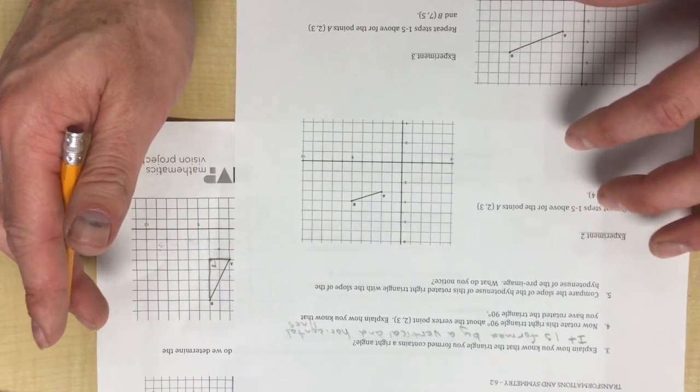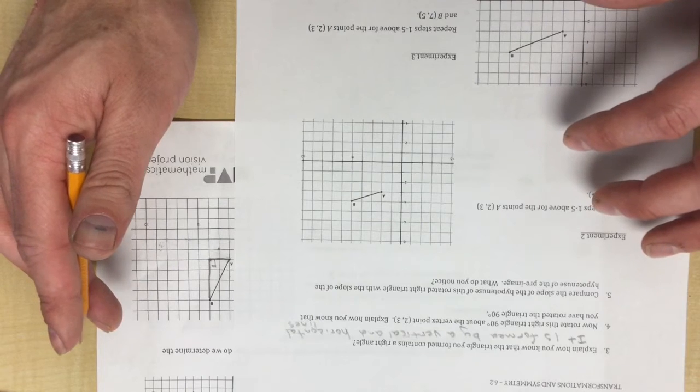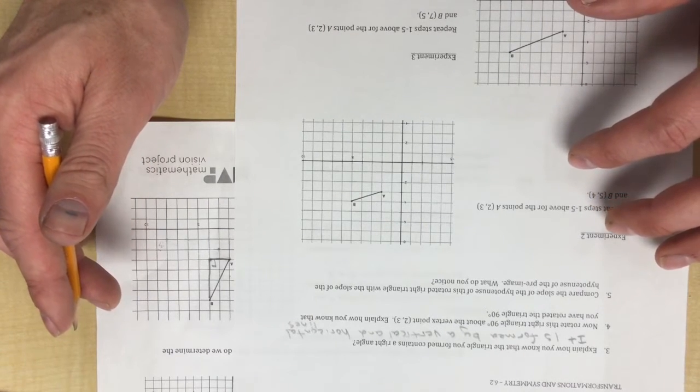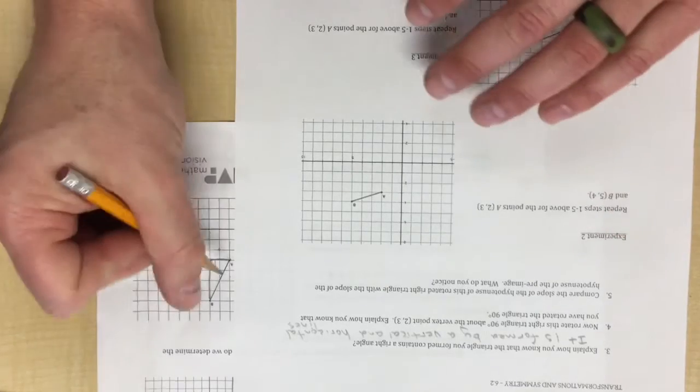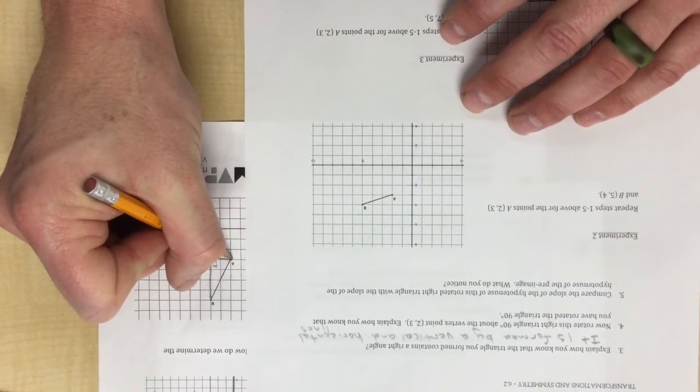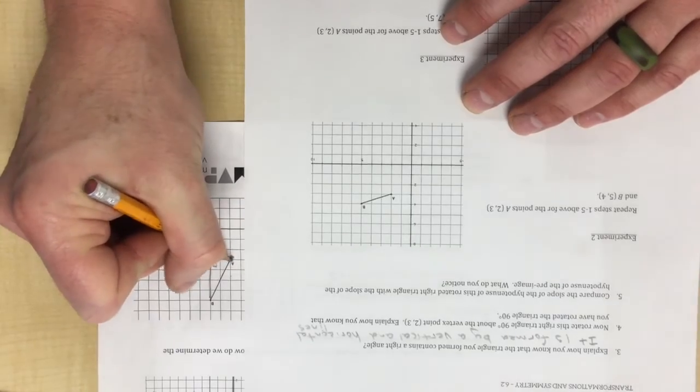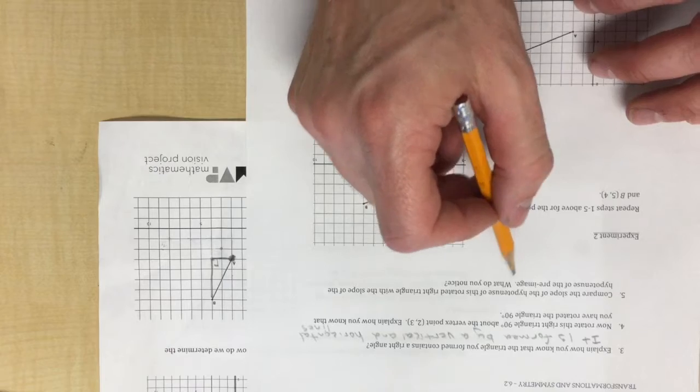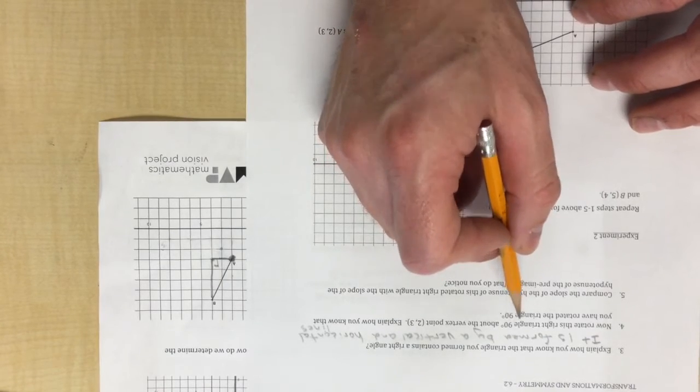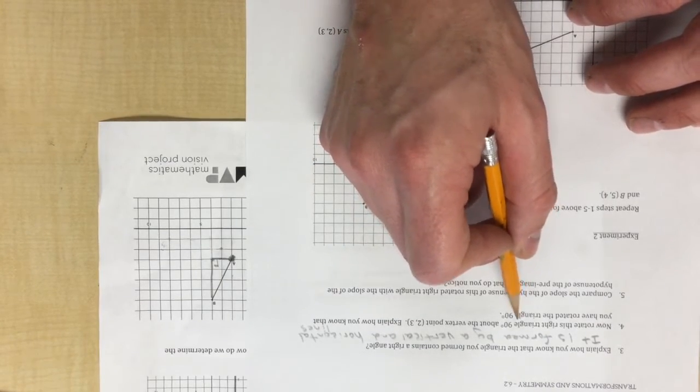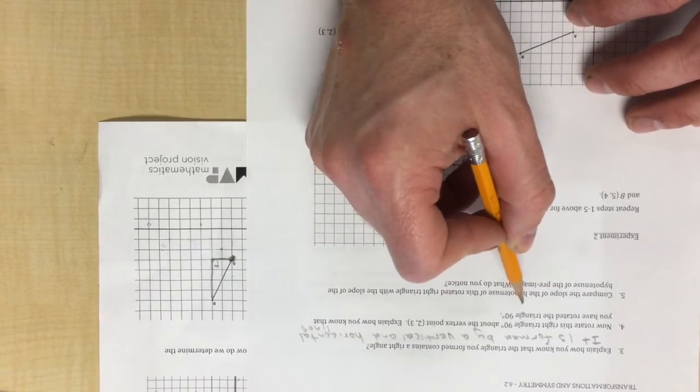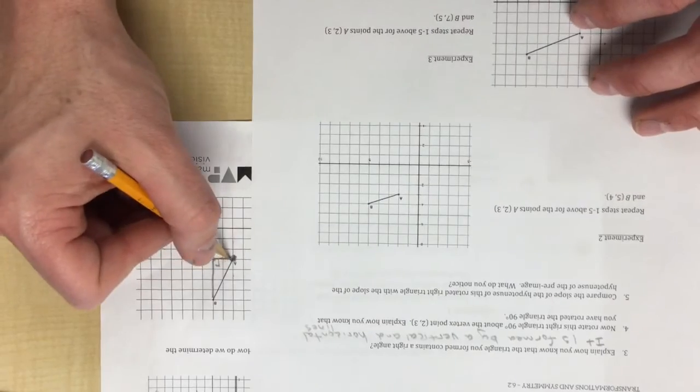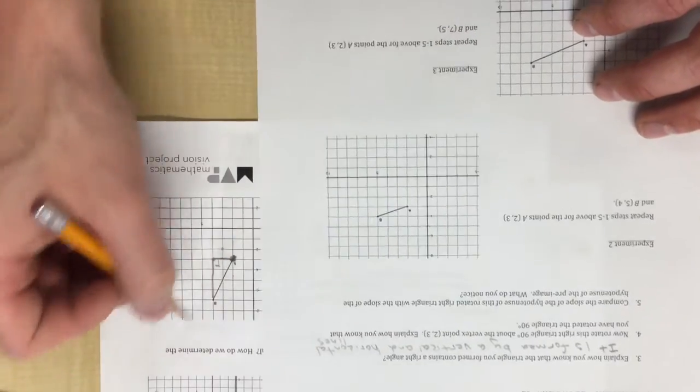For: rotate the triangle 90 degrees about the vertex point (2,3). Explain how you know that you've rotated the triangle 90 degrees. This is the part where it gets a little tricky. So the point (2,3) is right here, so go ahead and put a heavy dot on it. Now it doesn't say whether or not you should rotate it clockwise or counterclockwise, so let's just go with clockwise for today.